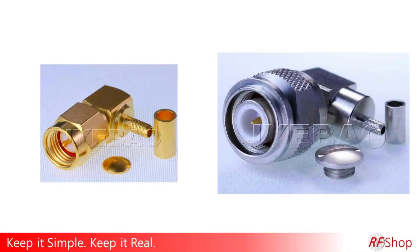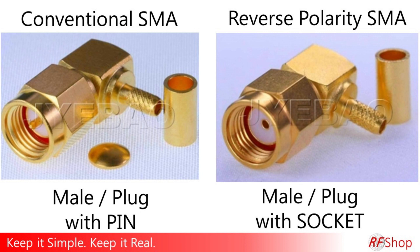You look at the body, you see it looks male because it has a nut. On the inside, when it is a male, you expect to see a pin — a little pin. That's conventional, that's what you expect. If it's reverse polarity, there's no pin — there's a socket. In other words, you have a male body with a female socket. That is reverse polarity.